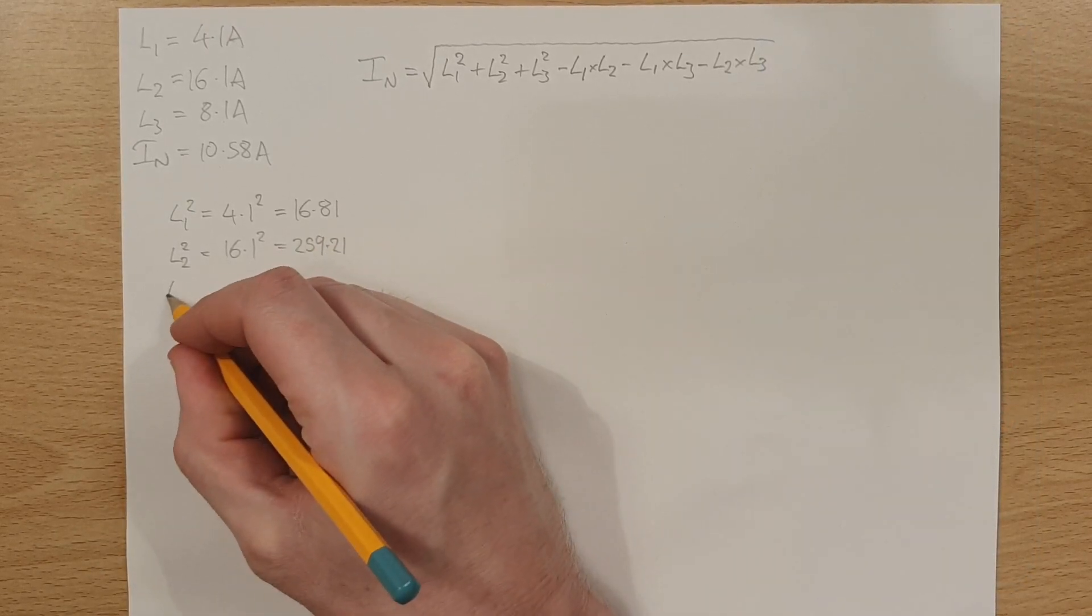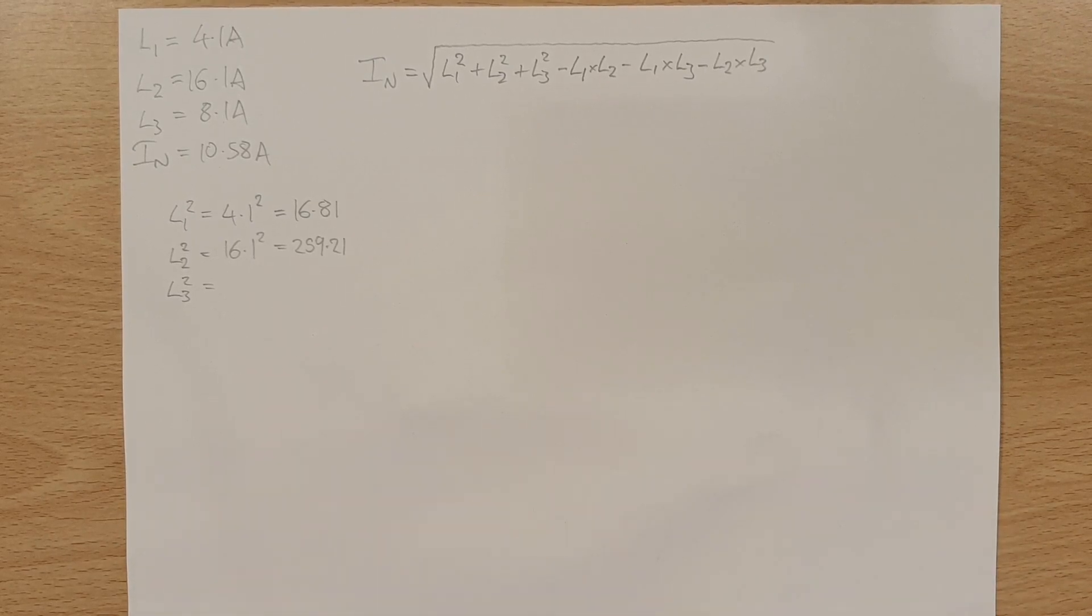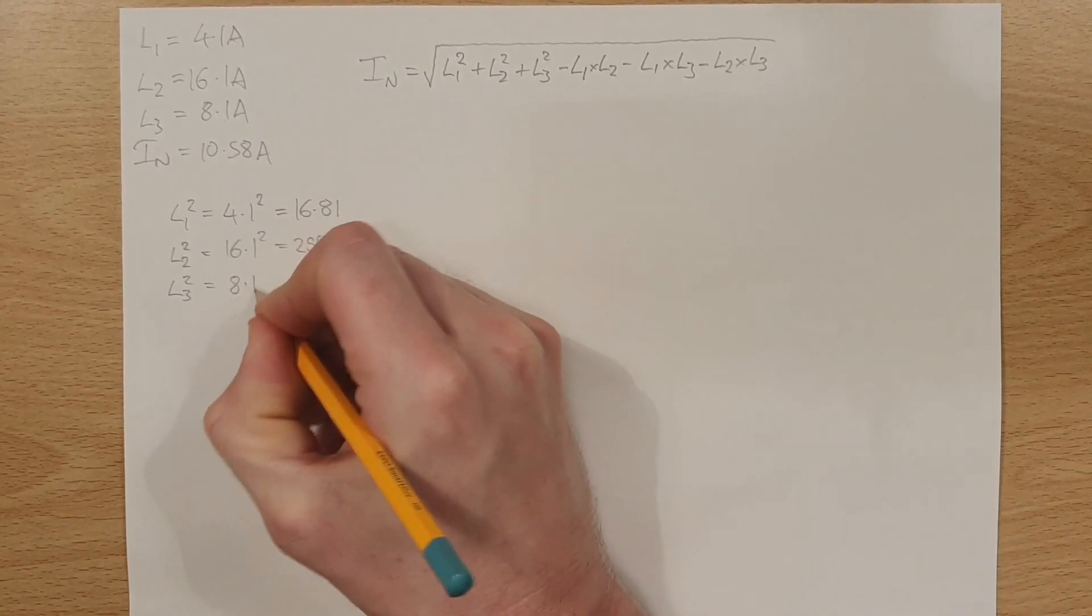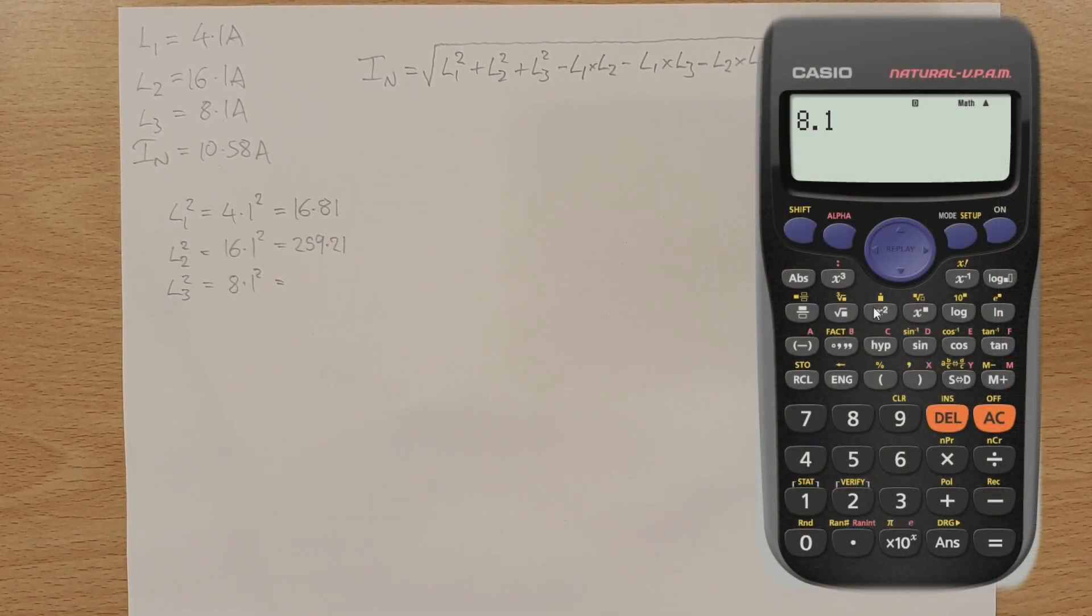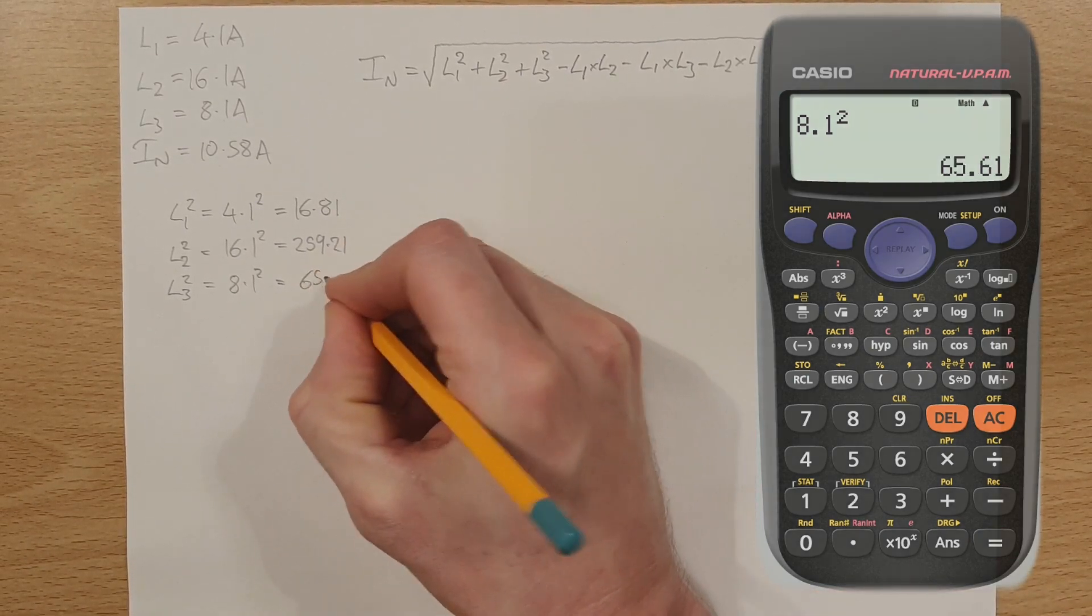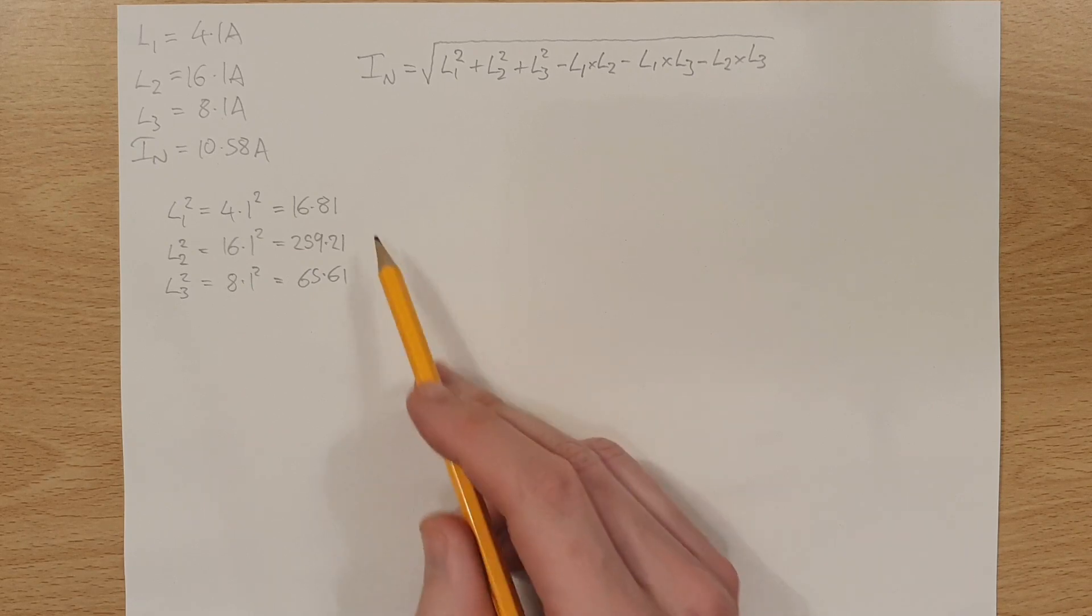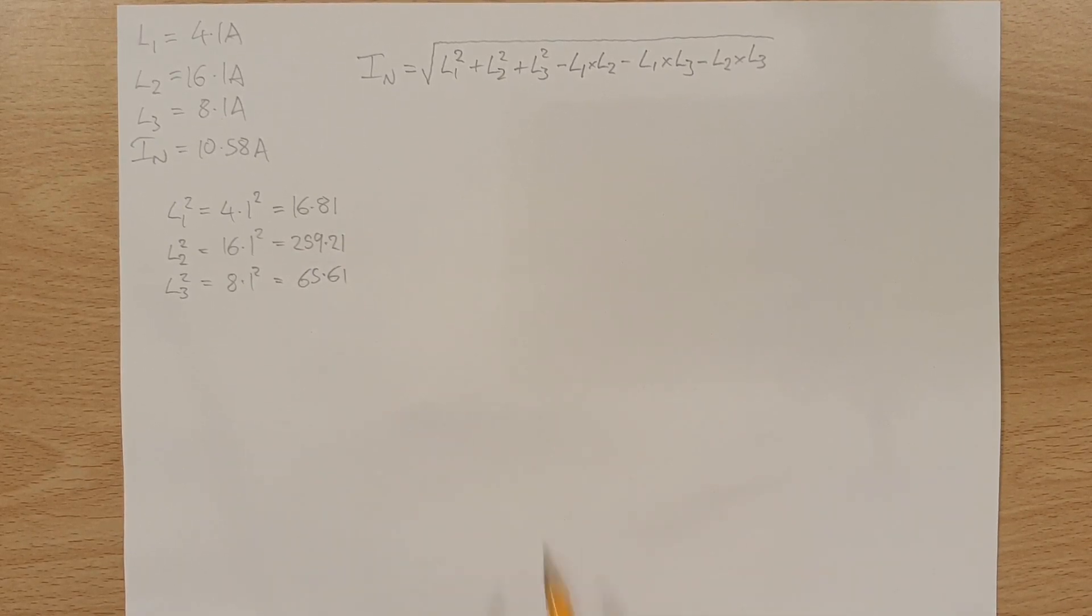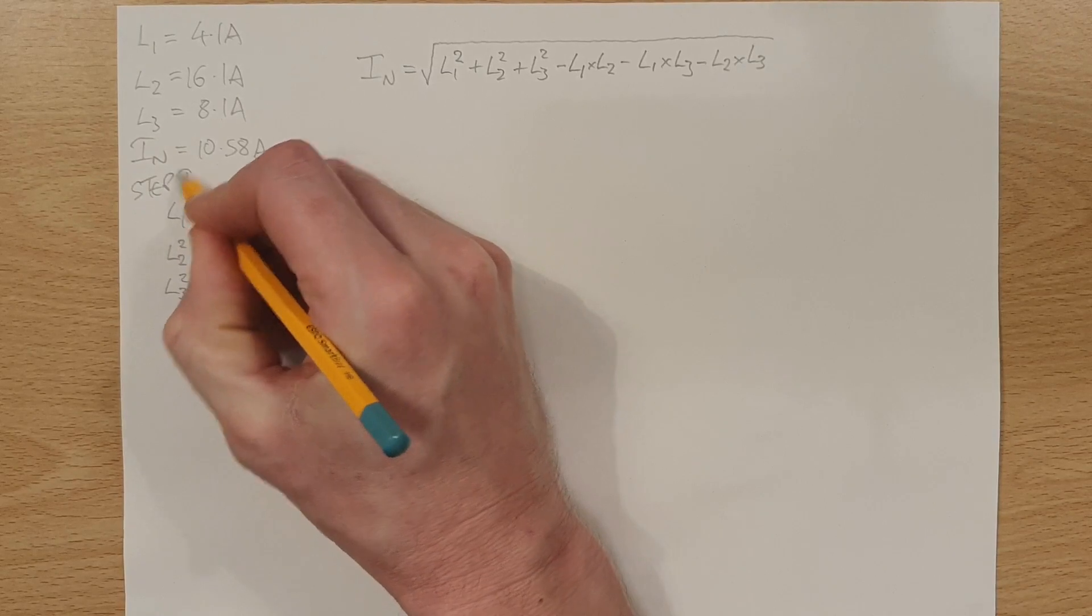And then we're going to do L3 squared, which is equal to 8.1 squared. So let's put that onto our sheet. 8.1 squared is equal to 8.1 squared is equal to 65.61. Notice I'm not putting any units on the end of here because these are largely meaningless now. They're just numbers. They don't represent any particular quantity, which is why I've not added any unit onto the end of it. So we've got our three values squared there. And now let's have a look at the next step. So we can sort of say that this is step number one, if you like.